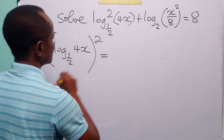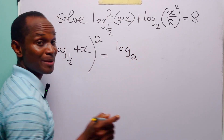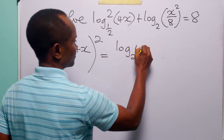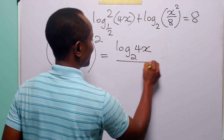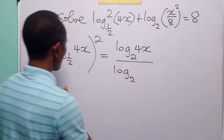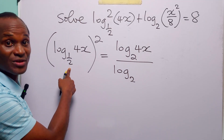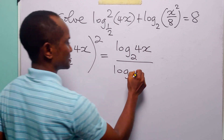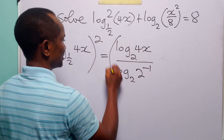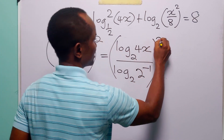When we do that, this is going to be equal to log to base 2. Remember, 2 is the new base of 4x, divided by log to base 2 of the old base, which is one-half. You know that one-half is the same as 2 to the power minus 1. And this is still squared.